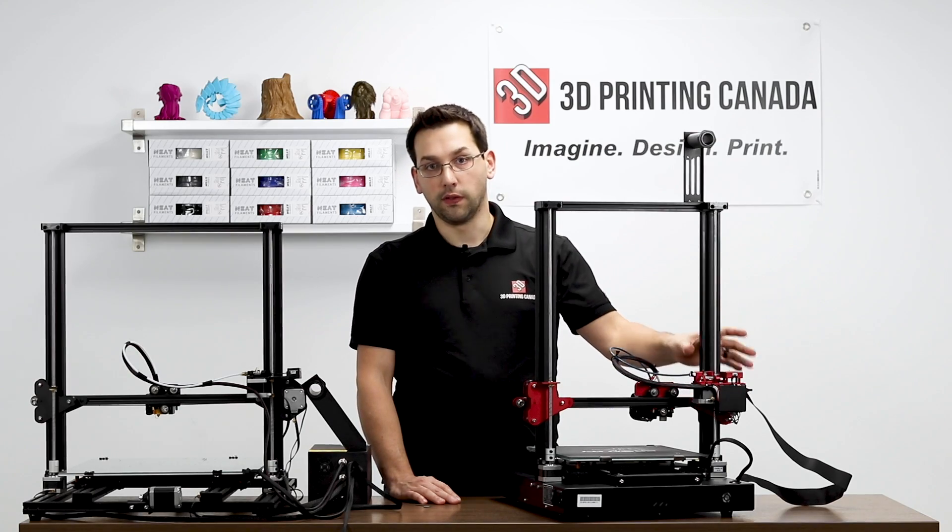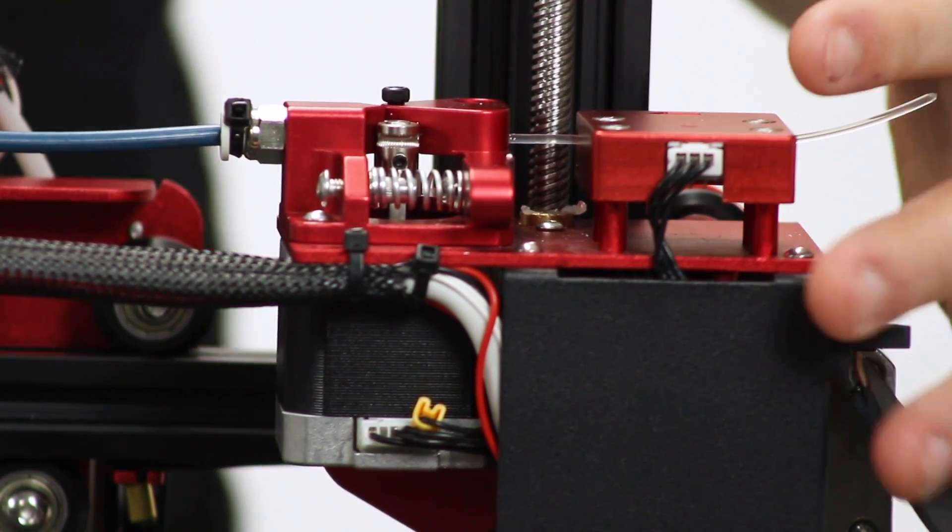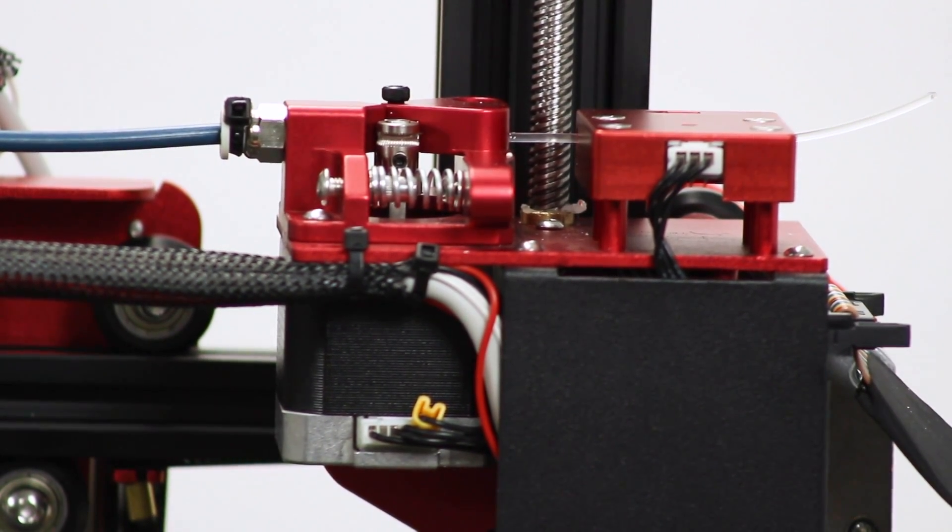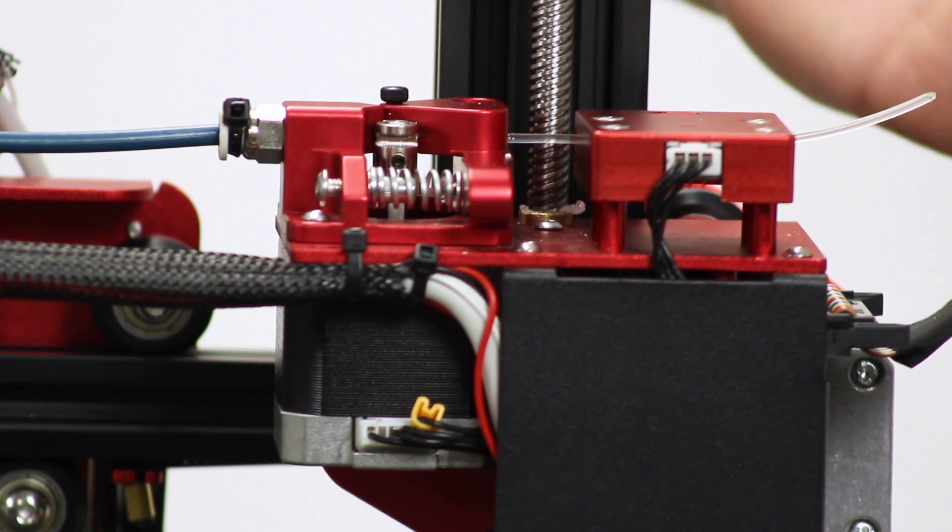So here is probably one of the largest departures that we see on the CR-10S Pro versus the CR-10S. The entire extruder assembly here, including the cable, is completely different than what we've seen on their previous models. The cable, we saw first on the CR-X.